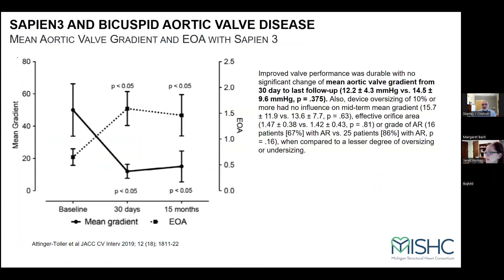Will the calcium density and location impede the TAVR frame expansion? We consider these factors. How long the raffae is and how calcified it is — trying to overwhelm a calcified perpendicular raffae, is that going to put the patient at risk of annular rupture when we implant? Raphaes are very unforgiving because there's nowhere for them to go but outside the annulus. Then the sinus width and height — can we accommodate the TAVR, but also can we accommodate a second TAVR?